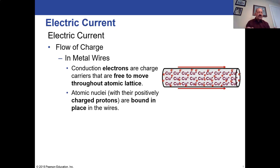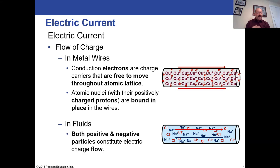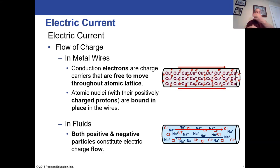If you have fluids with charges in them, you can have both positive and negative particles flowing towards their opposite charges. In a tube of salt water — water with sodium chloride — the salt breaks into sodium plus ions and chloride minus ions. The negative chloride ions flow towards a positive charge on one side, while the sodium ions, which are positively charged, flow toward the negative charge on the other side. You get a net flow of charge because the negative and positive charges are flowing in opposite directions.